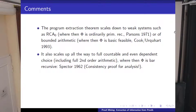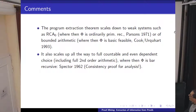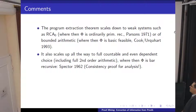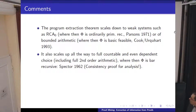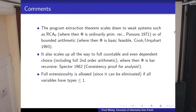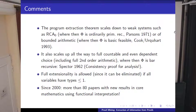You can also go to much stronger systems, to full analysis—which includes full second-order number theory. Then you can also carry out the Gödel interpretation; this was done by Spector. You just have to add one more scheme: in addition to primitive recursion, you now have to use so-called bar recursion, which is a recursion on well-founded trees. And as I said, in many cases the problem with extensionality can be removed, and there have been many applications of these techniques.